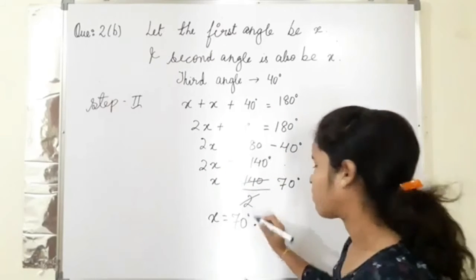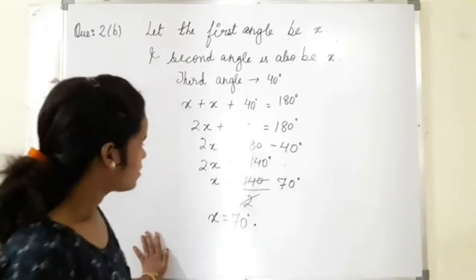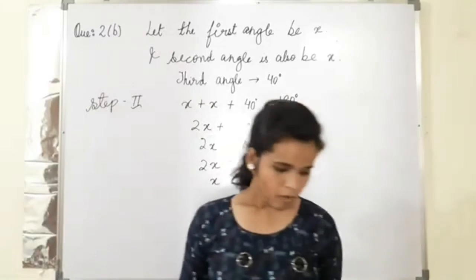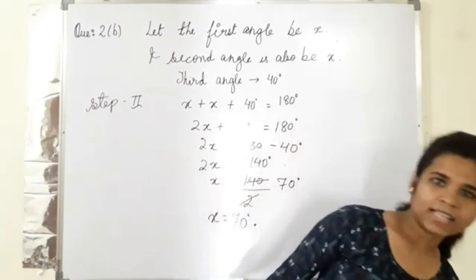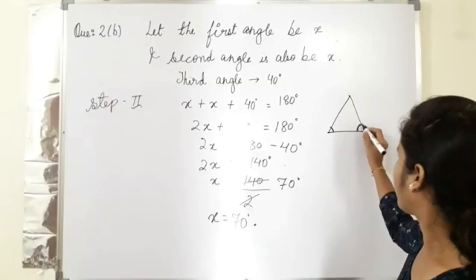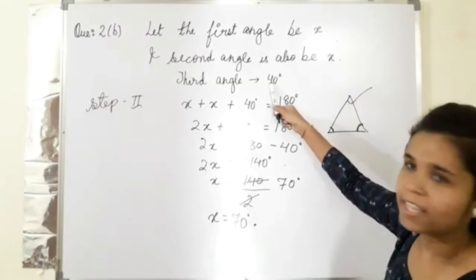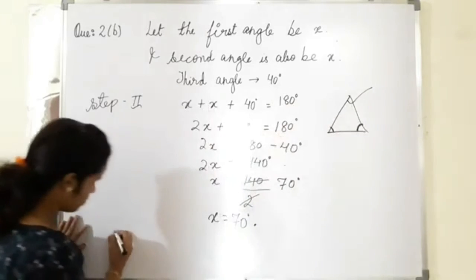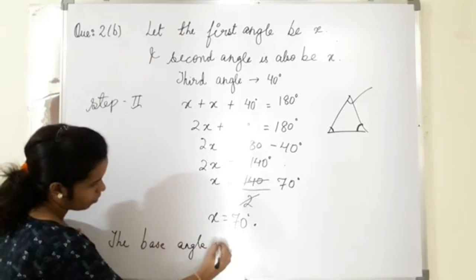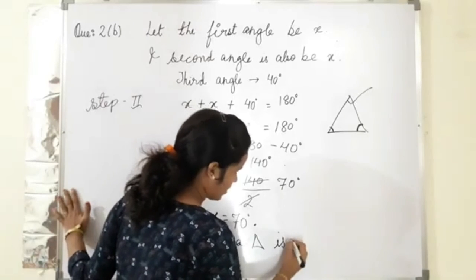x equals to 70. We get here the value of x is 70 degrees, means the last line was what are the base angles of a triangle? So the base angles, the base angles of a triangle. Suppose you have a triangle here, this angle is 70 degrees. So the base angles of a triangle is 70 degrees.